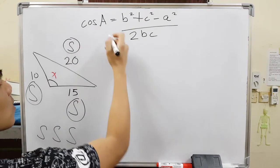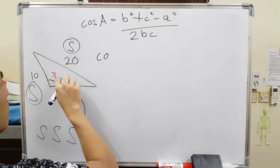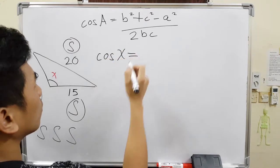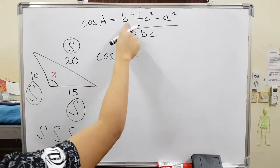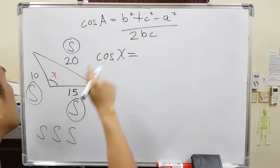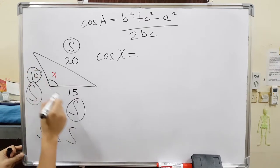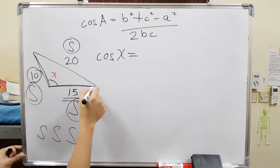So all you have to do is cosine A. So cosine my angle, x, which is I don't know what it is so far. B squared plus C squared. Now the question is, what is B and what is C? It doesn't matter which one is B or C, but they are the sides that make up the angle x.